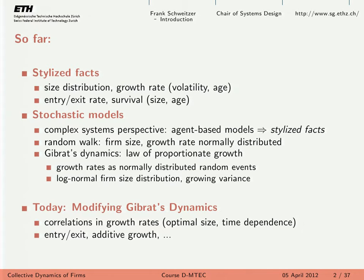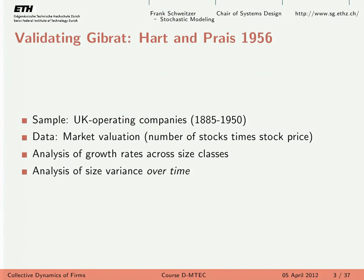There were a few things not properly included, in particular the issue of the growing variance. We got a log-normal firm-size distribution, but it was growing all the time, which is not in accordance with the stylized facts. Therefore, today we start modifying Gibrat's assumption in order to get this right.